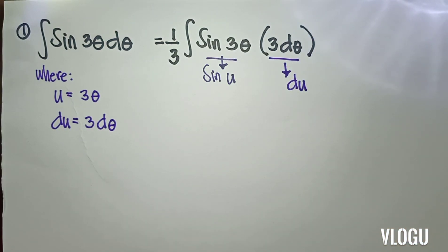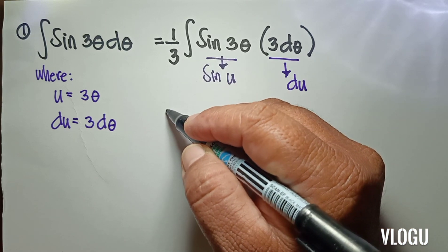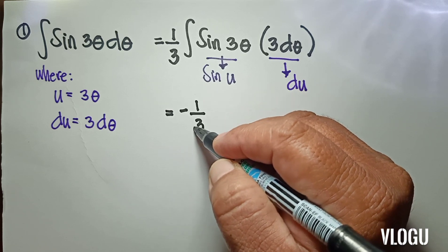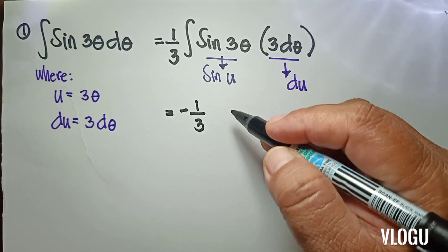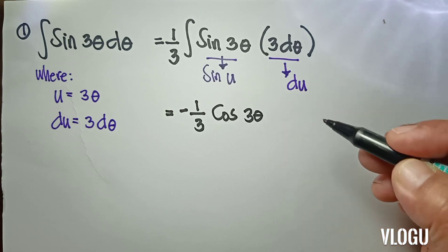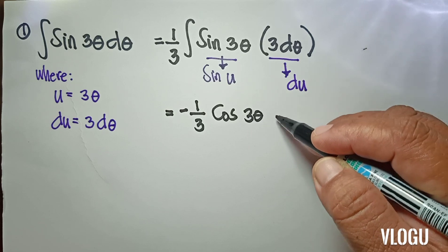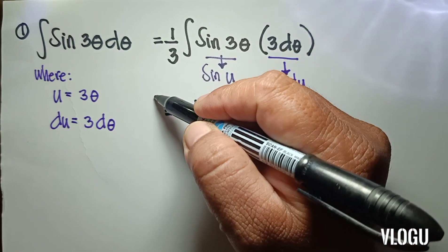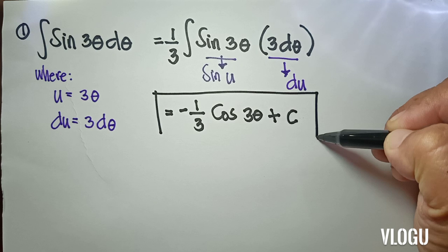We have a form of sin u du. From our formula, the integral of sin u du would be equal to negative cosine u plus c. So our final answer is negative 1/3 cosine(3θ) plus c.